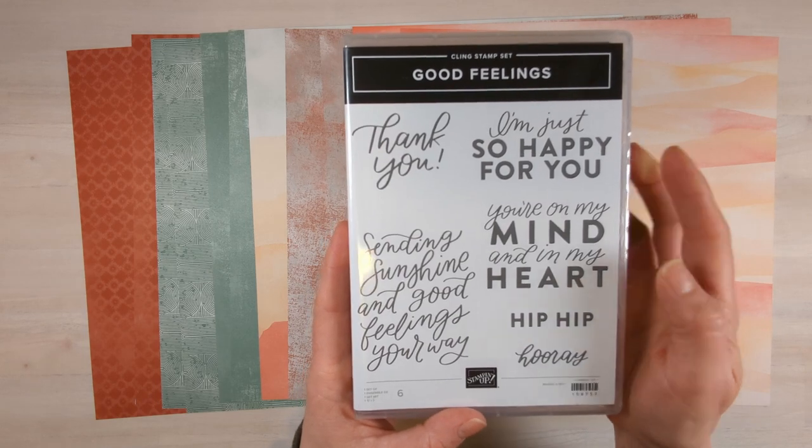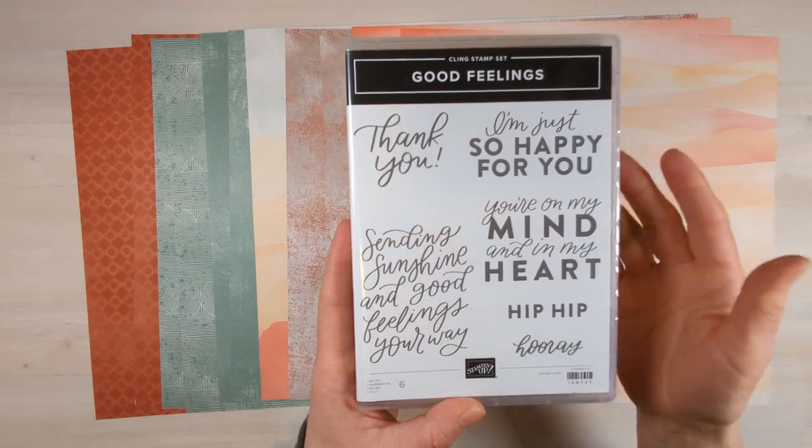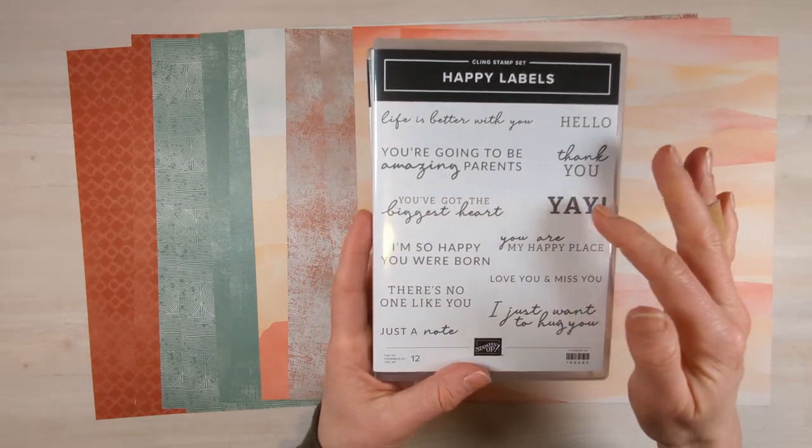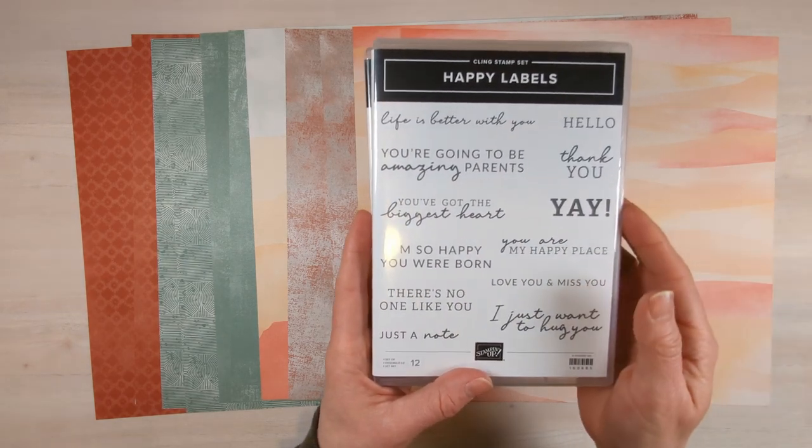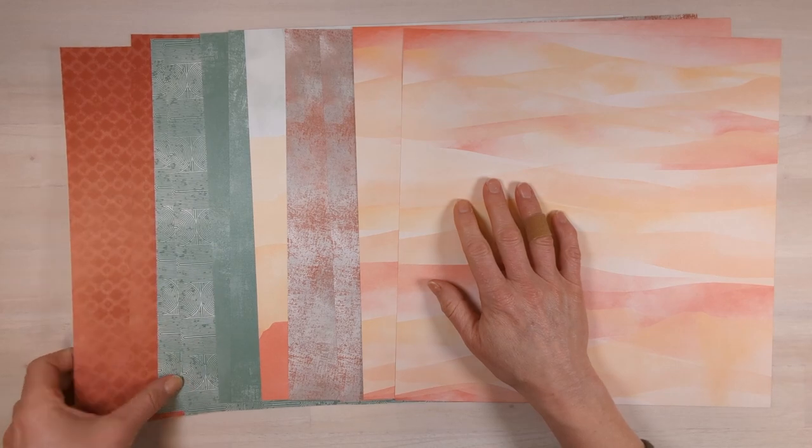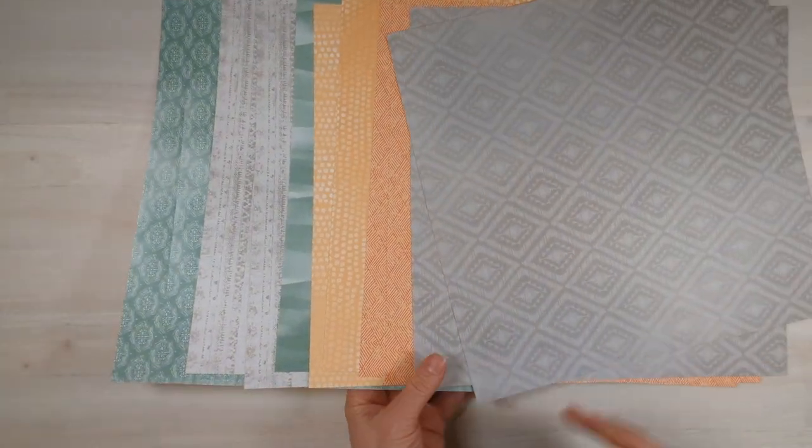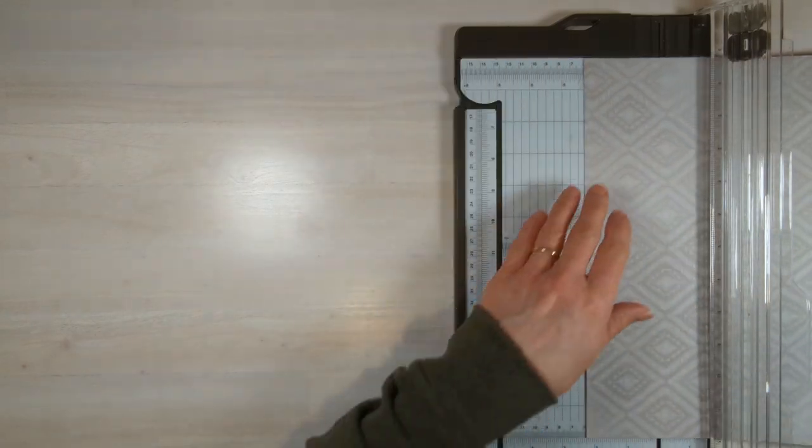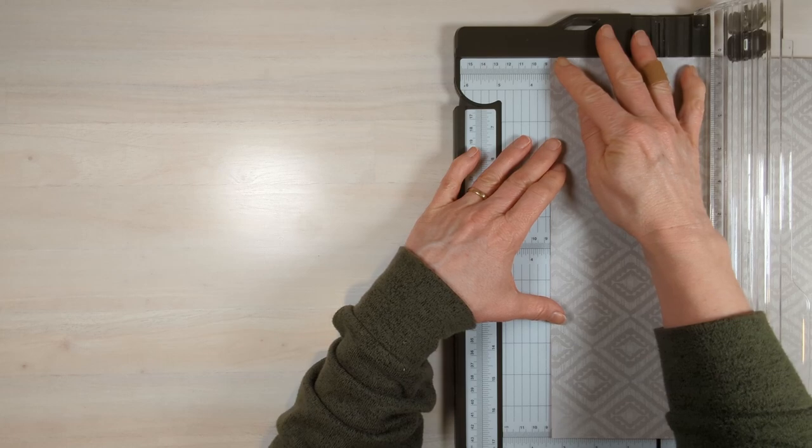I'm going to be using the Good Feeling stamp set just because they have these really large sentiments that are great for the front of a card. Then I'm going to be using the Happy Labels for the inside. On some of my samples, I use these on the envelopes too. For the card we're making together, I'm going to be using the Delicate Desert Designer Series paper. Aren't these just awesome? I love these colors together. We're going to be using this one. That pack of paper is out of the new mini catalog, so if you haven't looked at that, there are so many fun things in there.